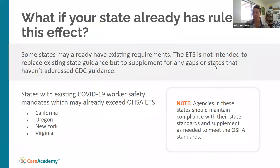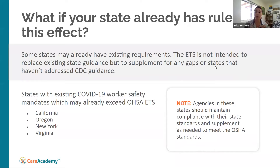If your state already has its own rules, ones we know of include California, Oregon, New York, Virginia, and Washington — though this is not a complete list, and more states may have their own requirements. It's possible your state has their own ETS with their own COVID-19 precautions and worker safety requirements. If that is the case, this OSHA ETS is meant to supplement or be exceeded by those state requirements. OSHA made it really clear that this is not meant to take the place of state rules — it's meant to pursue CDC guidance and provide that level of understanding for business owners.